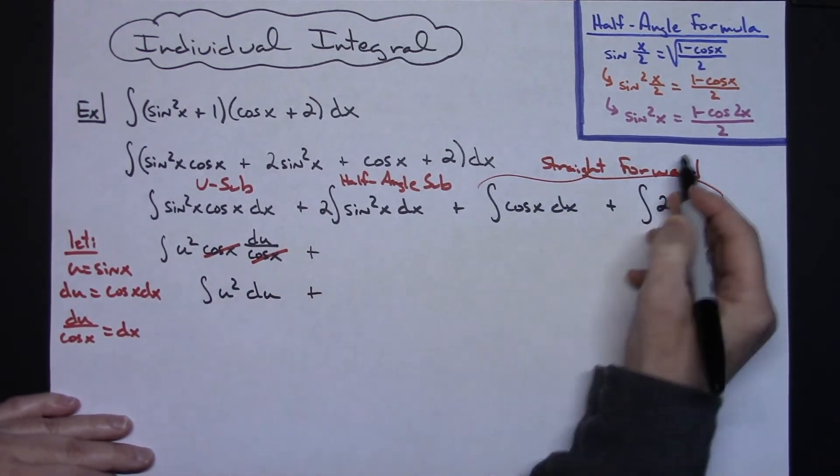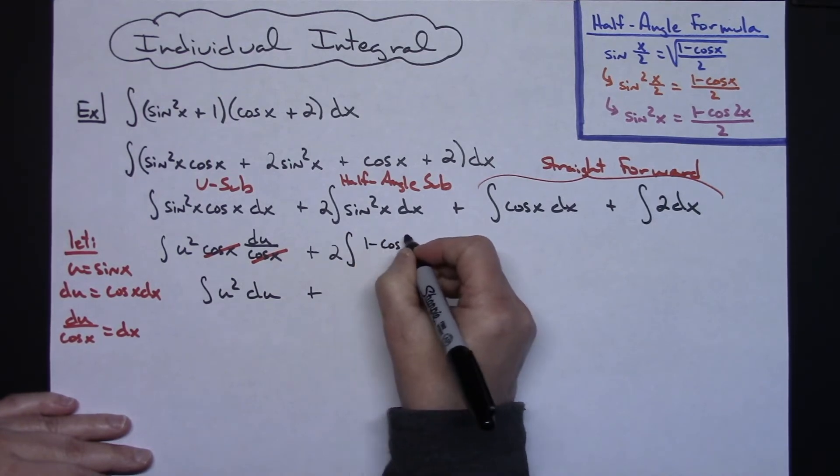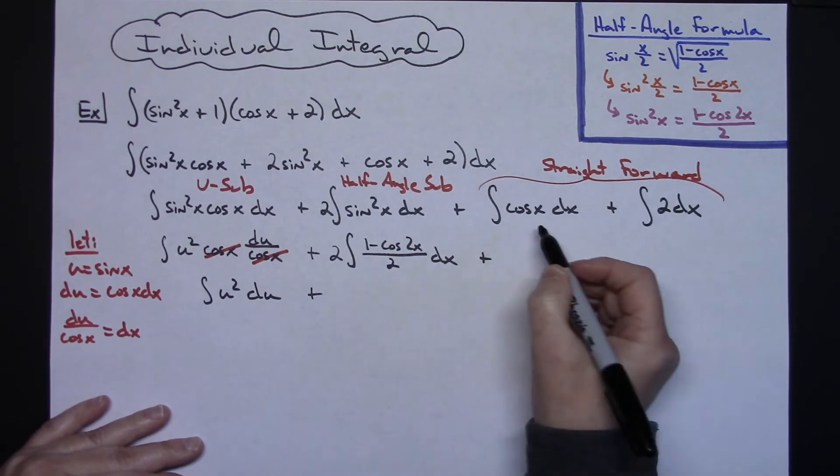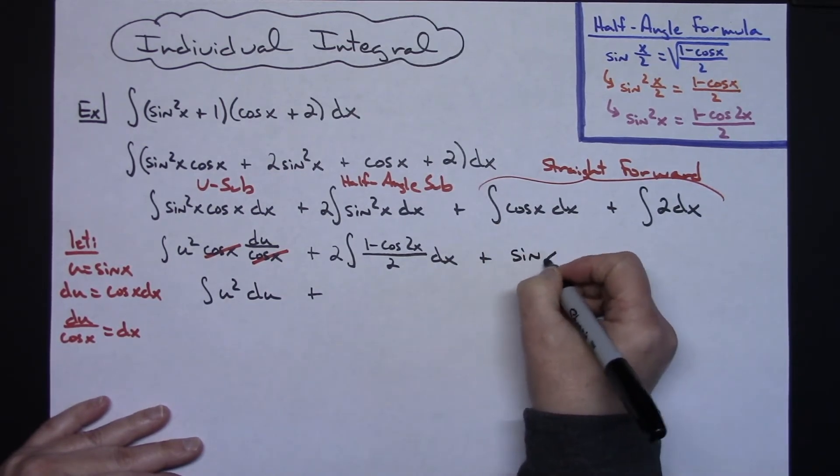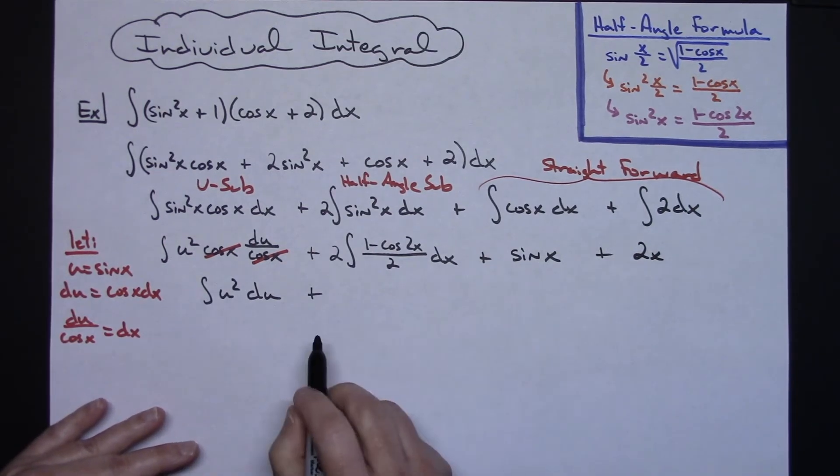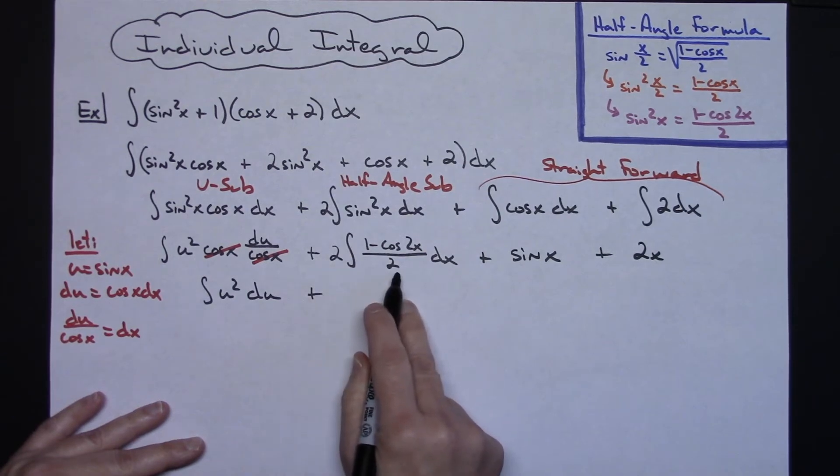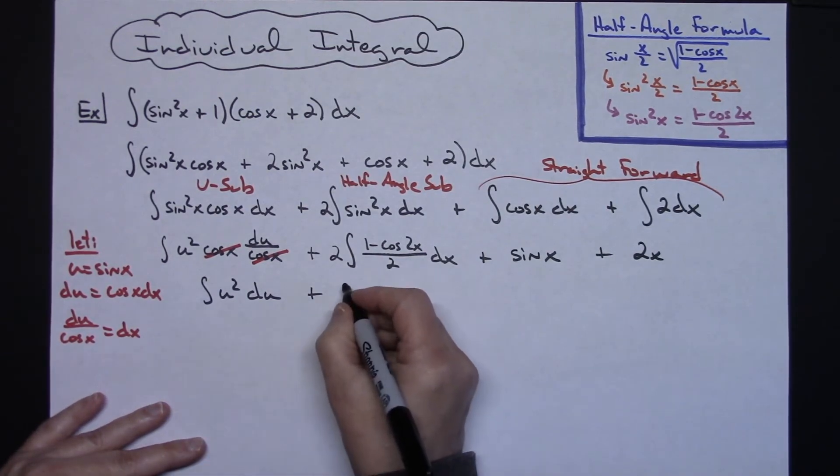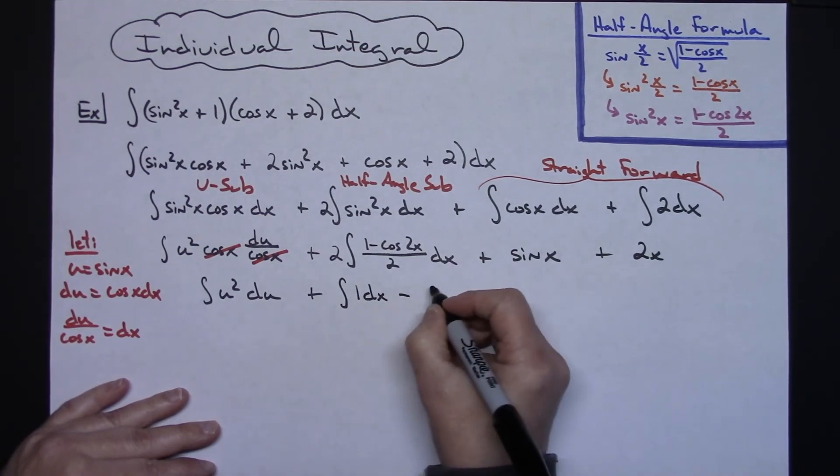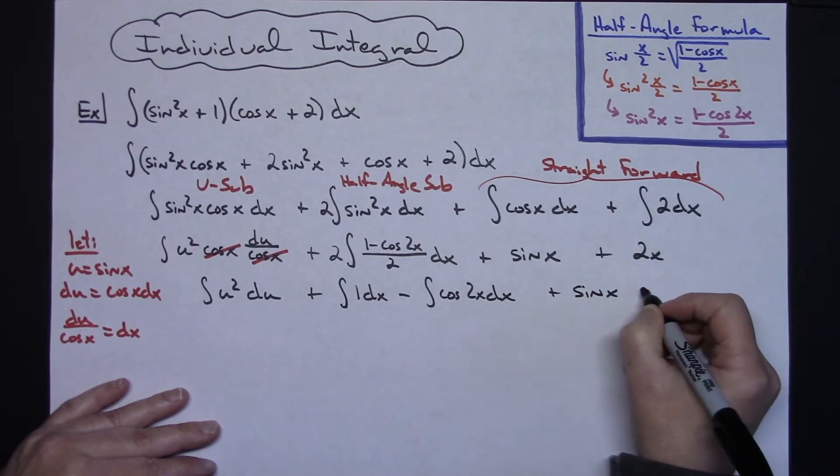In this middle term now I'm going to do this half angle substitution so we've got the 2 that's out in front, integral of 1 minus cosine 2x all over 2 dx. And then these, let's go ahead and integrate those since they're going to be straightforward. Integrating cosine I'll have sine x here. Integrating 2 on that dx I'll just have 2x and we don't need to put the plus c in until a little bit later. Now this one I've already got the integral of 2x. If I pull a 1 half out in front here that 1 half times the 2 there is going to make that go away so then I'm just going to be down to the integral of, and I think I'm going to break those up into two individual integrals, so the integral of 1 dx minus the integral of cosine 2x dx and then plus the sine x and plus the 2x there.